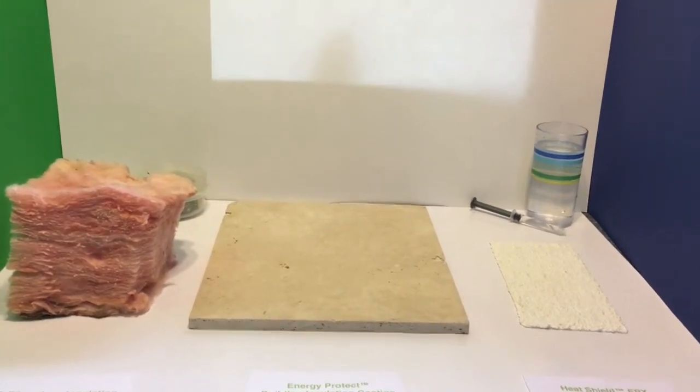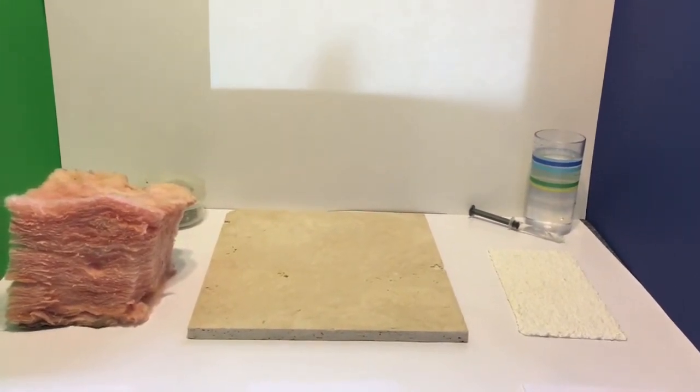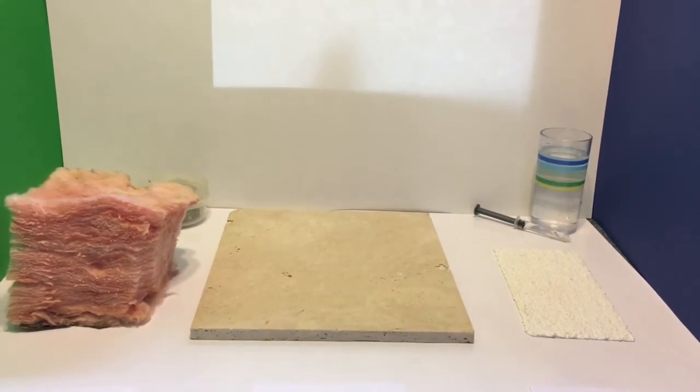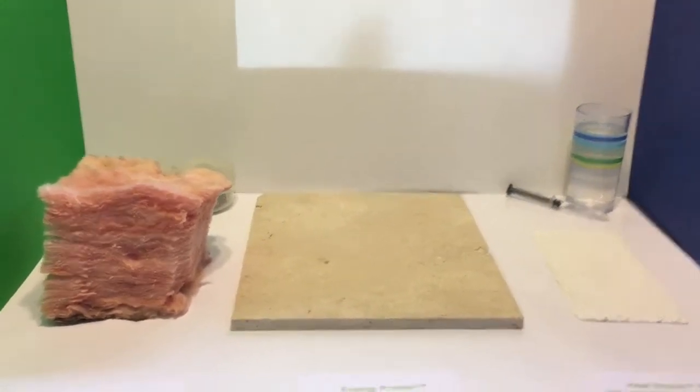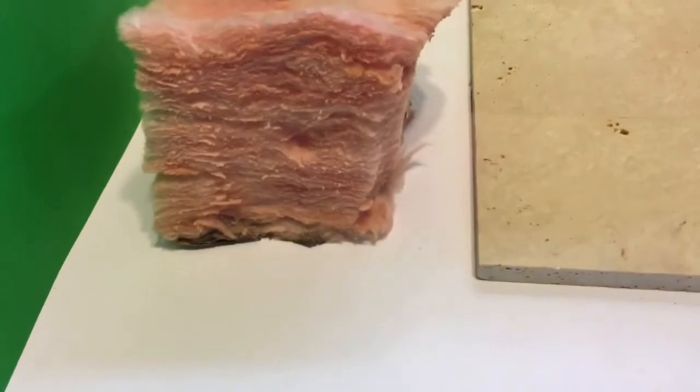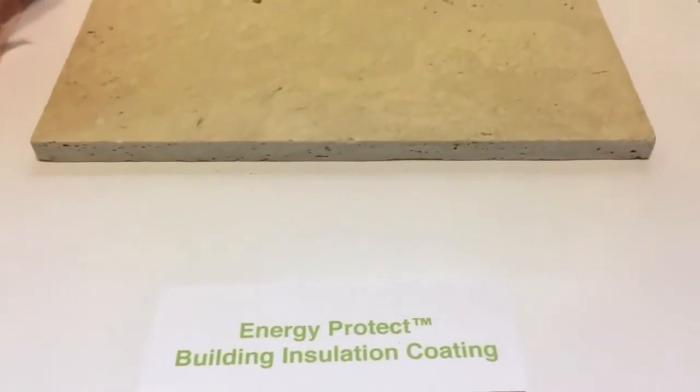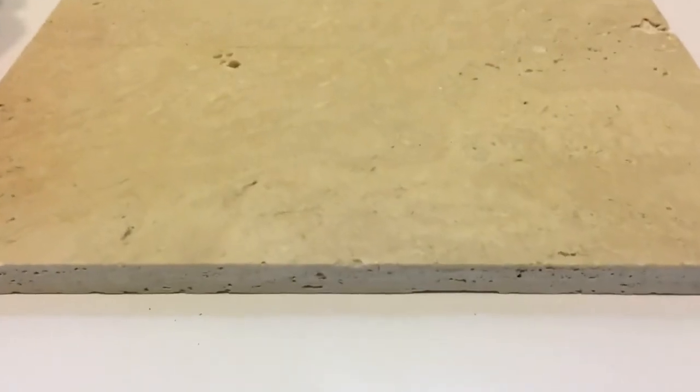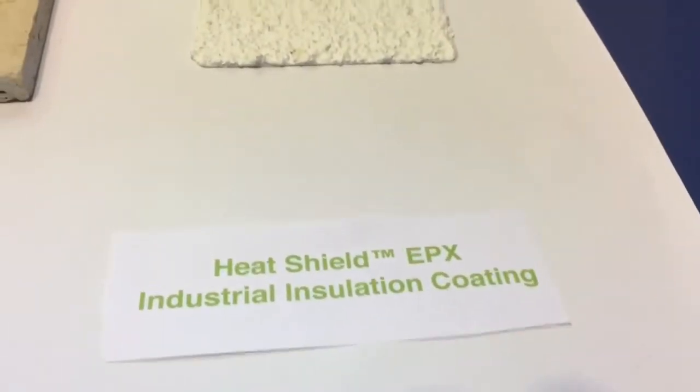I often try explaining this to people, but seeing is believing, so I have a quick demonstration using R30 fiberglass bat insulation, three coats of our Clear Energy Protect coating for building insulation, and two coats of our Heat Shield EPX H2O coating for industrial insulation of pipes, tanks, and equipment.